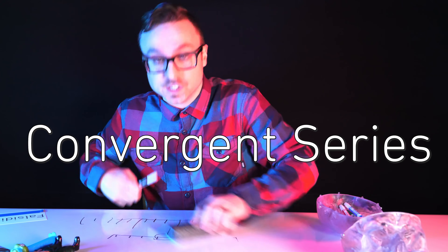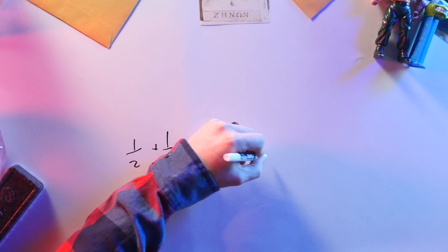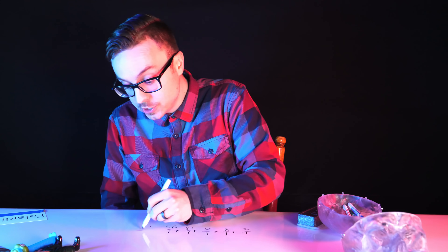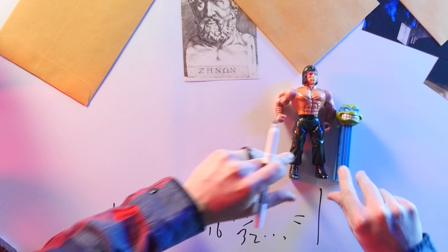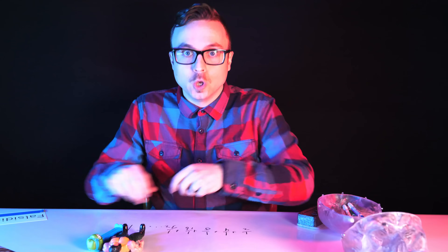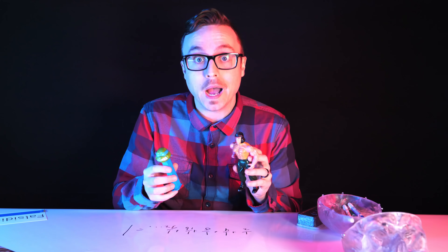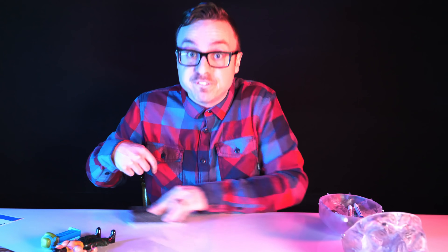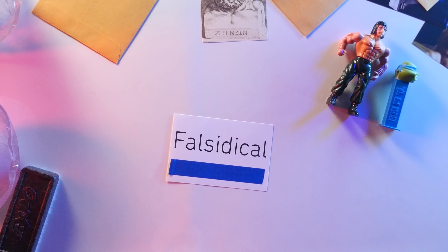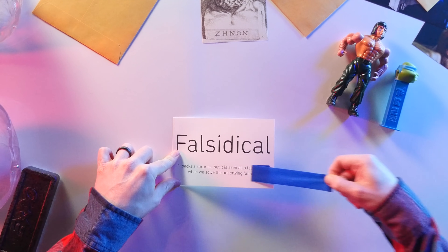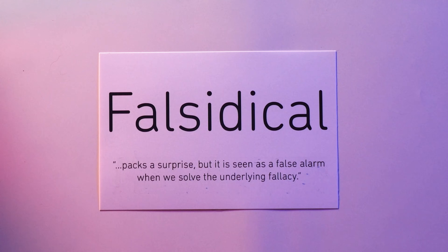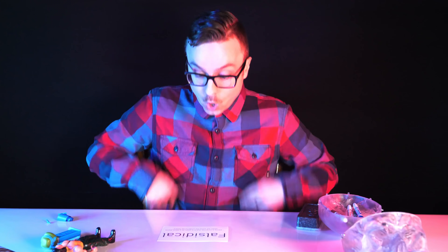What we now call a convergent series — one-half plus one-fourth plus one-eighth plus one-sixteenth plus one-thirty-second — goes on forever, but it eventually adds up to one. And at that one is where, mathematically, Achilles finally reaches the tortoise. We knew that Achilles could catch up to the tortoise, but it took inventing calculus for us to prove why. Which is why this paradox that confounded great minds for thousands of years is falsitical. A falsitical paradox packs a surprise, but it is seen as a false alarm when we solve the underlying fallacy. That's one paradox envelope down and two to go.